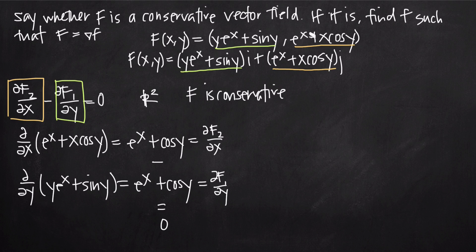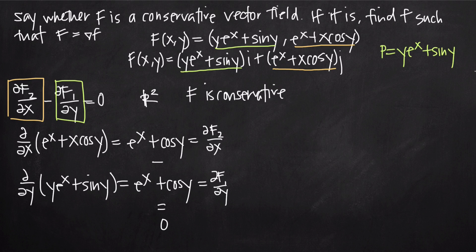With the first half complete, we now find a function lowercase f such that the vector field F equals the gradient of f. We identify P and Q from the vector field: P (the coefficient on the i term) equals y e to the x plus sine y, and Q (the coefficient on the j term) equals e to the x plus x cosine y. Note that checking the scalar curl is equivalent to checking whether the partial of P with respect to y equals the partial of Q with respect to x.